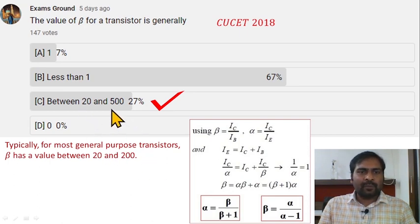So option C is correct here. Beta is the current gain in common emitter configuration, and alpha is current gain in common base configuration. The value of alpha is less than 1, not beta. Beta value is always more, so option C is correct here.